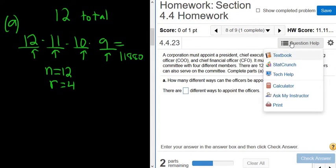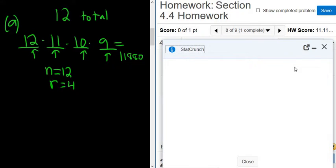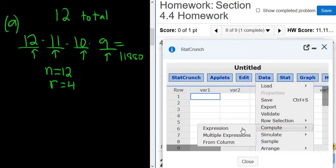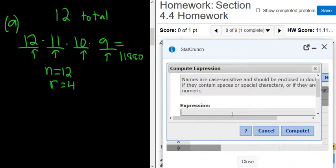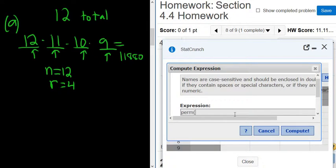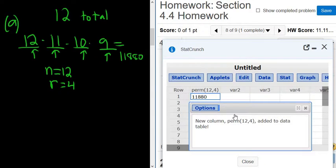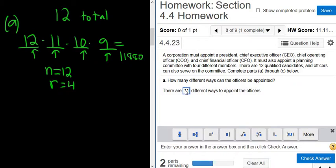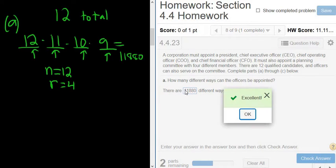So we go to question help, StatCrunch, and then it's data, compute, and expression. Then you just type in perm, 12 comma 4. So that would be the same answer, same answer as before, perm 12 comma 4. All right, let's type it in. So 11880. Good stuff.